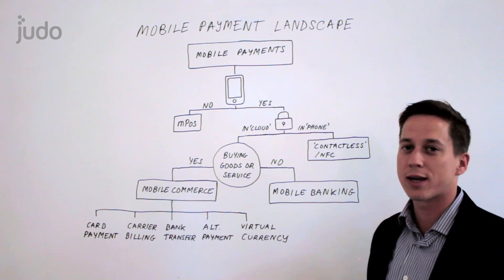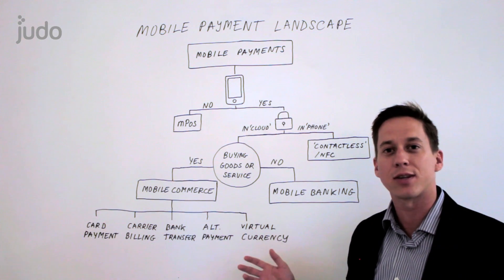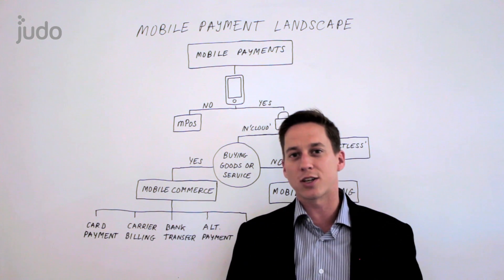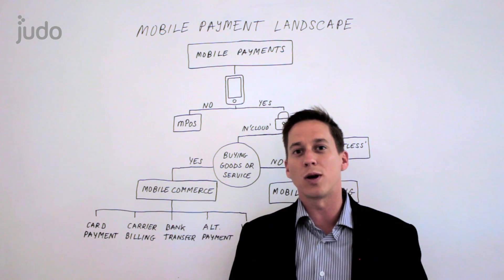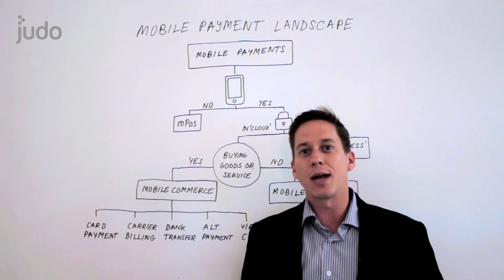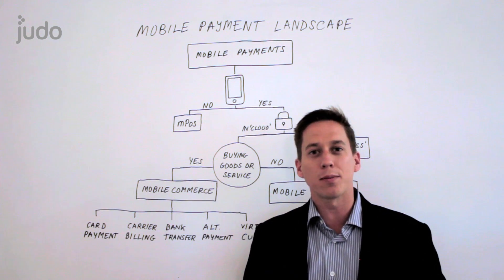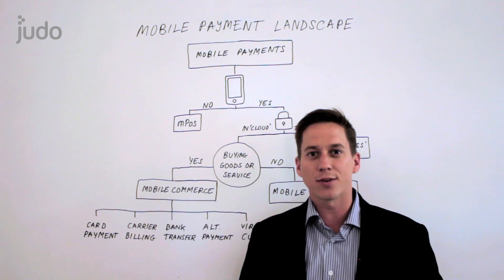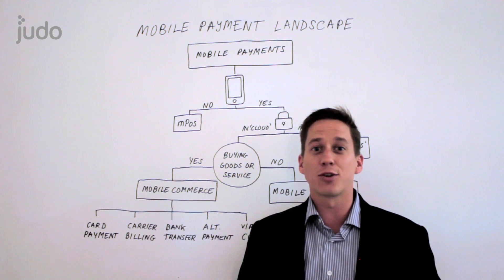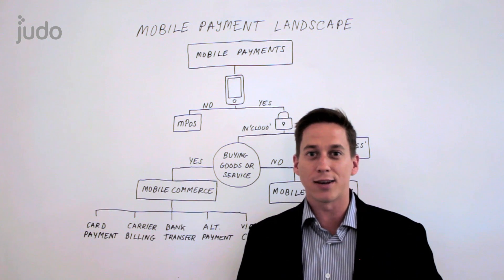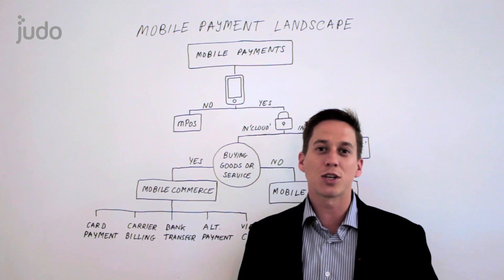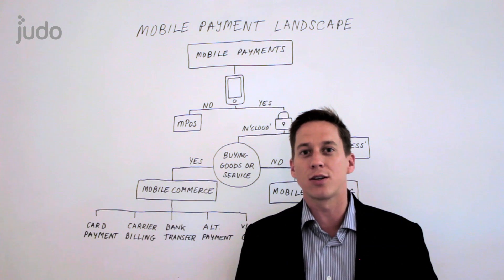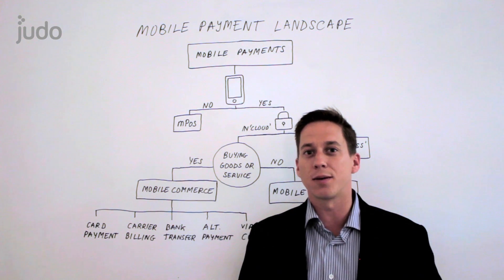What I'm going to do here is take you through how to think about the different types of mobile payments and what differentiates one type from another. Then I'm going to go through each one and talk about what problem it solves and some service provider examples, and then introduce a little more complexity right at the end. Unfortunately mobile payments is confusing, and part of what we try to do at Judo is simplify the complex.